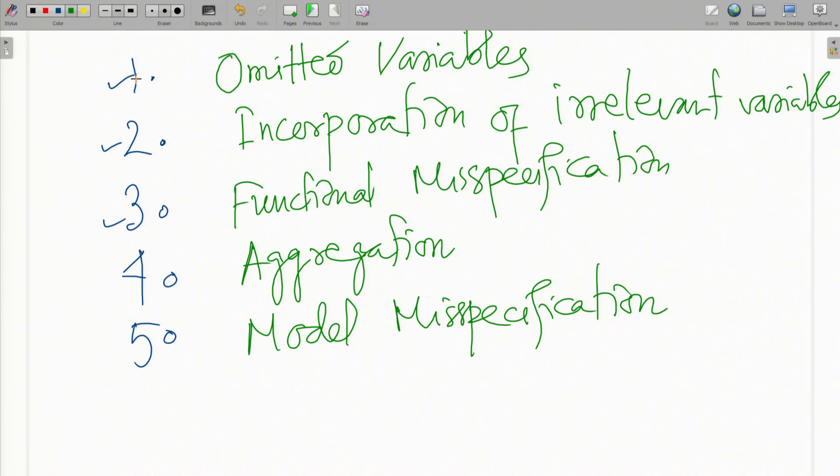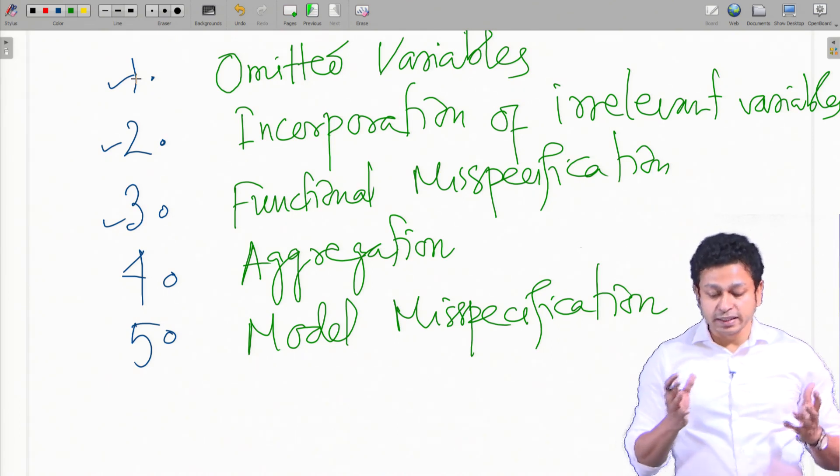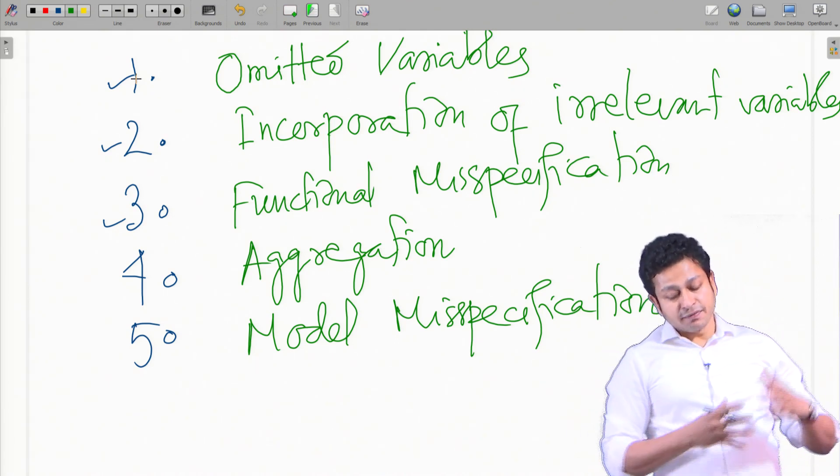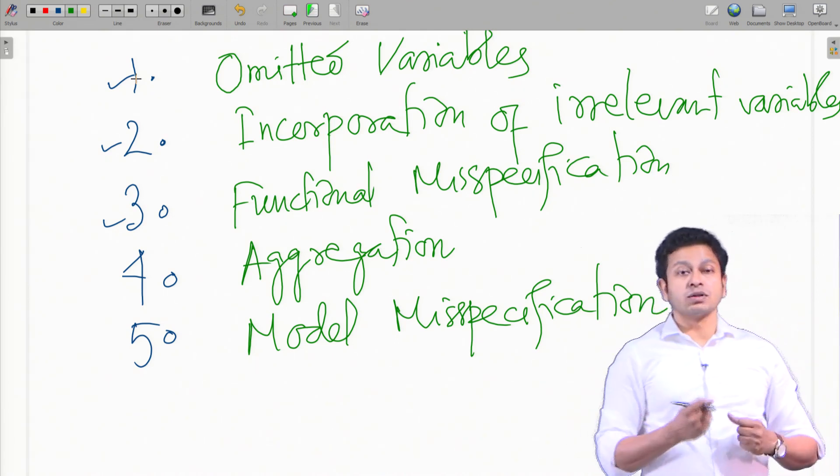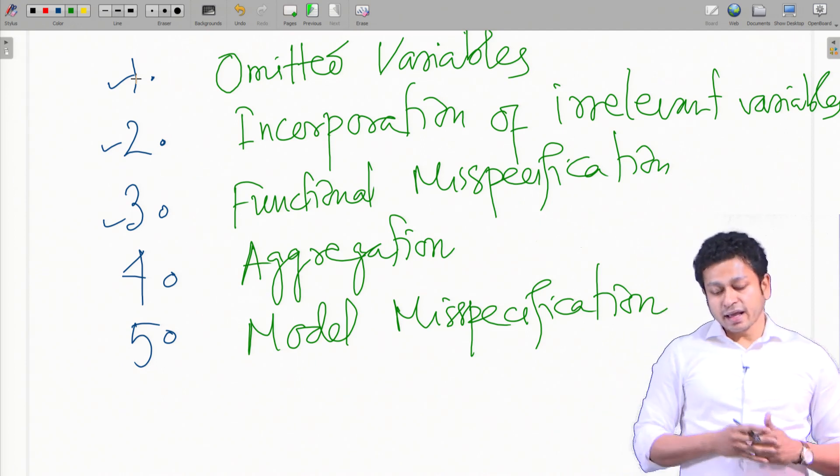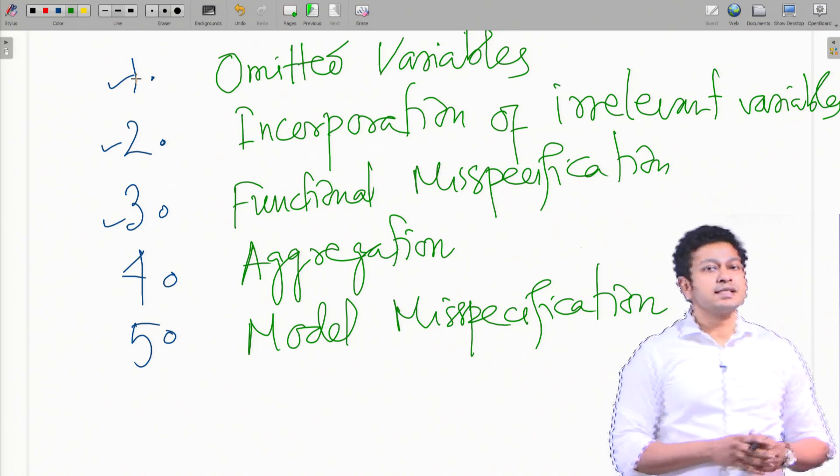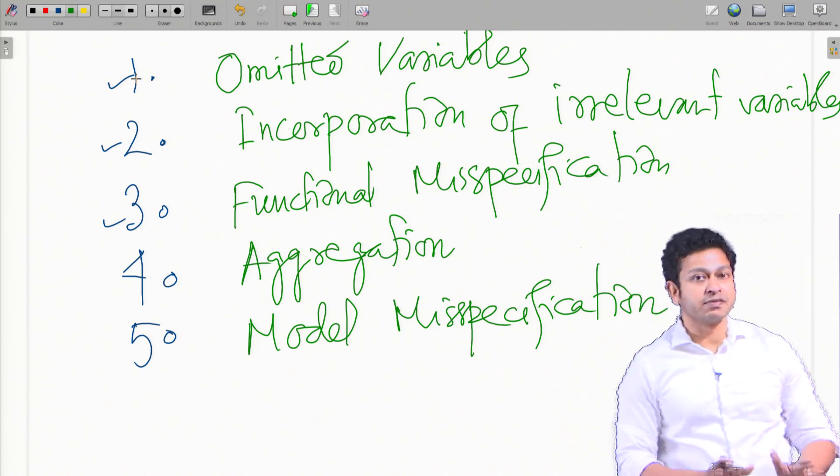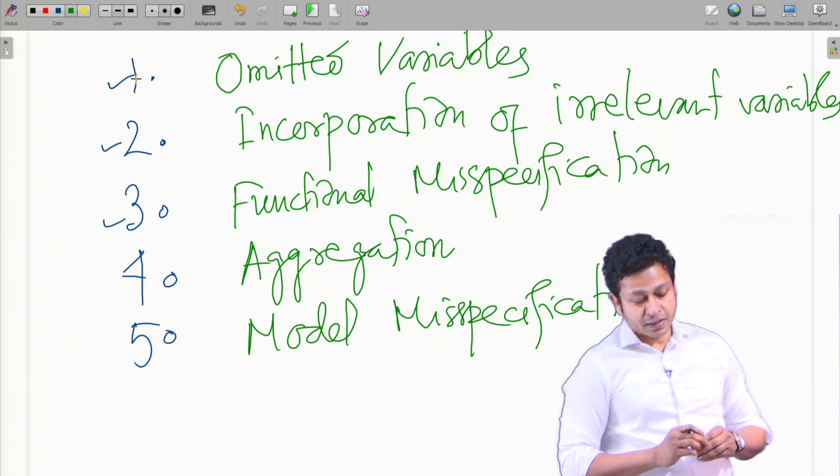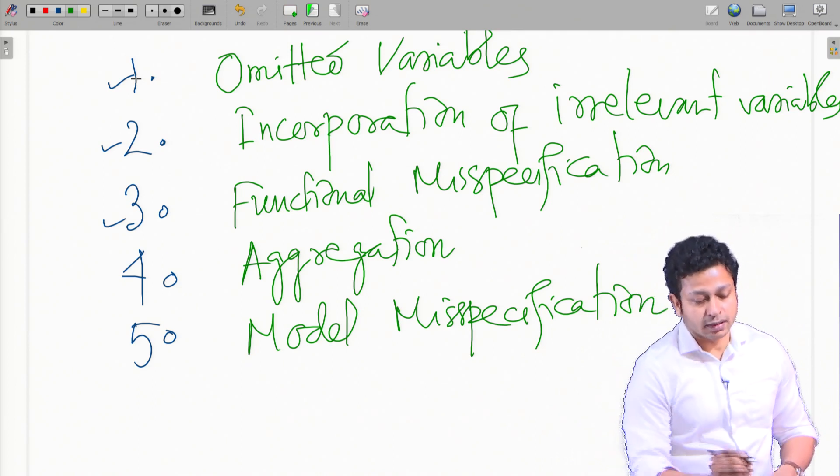For example, in a time series data suppose you have forgotten to take into account the past period influence. Instead of that you have just regressed Y with all the X variables. In that case your model is misspecified because you miss the structure here. That could be another reason why you can get errors.